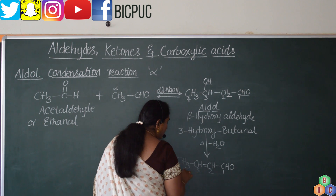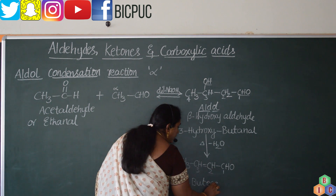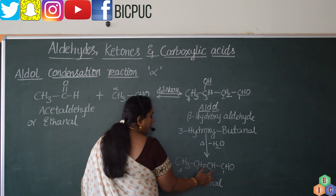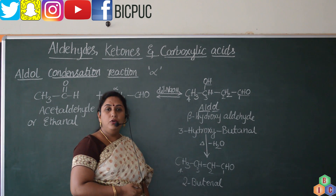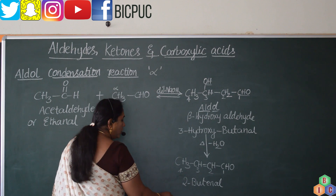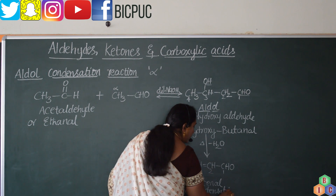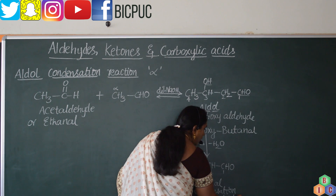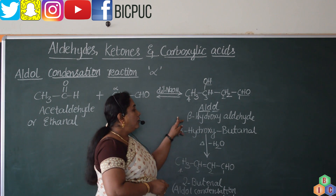The compound we are getting is 2-butenal. It is 2-butenal because between the second and third carbon atoms we find the presence of a double bond, and it also contains the aldehyde. Therefore, the name of this compound is 2-butenal, or we can write it as but-2-en-1-al. This is the aldol condensation product — the final product we get. In the exam, if asked to write the aldol condensation product, write this as the answer; for the aldol reaction product, write the aldol (3-hydroxybutanal) as the answer.